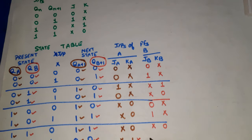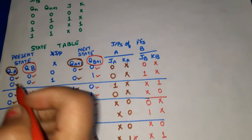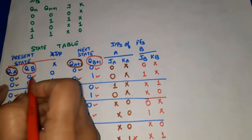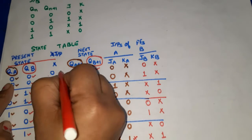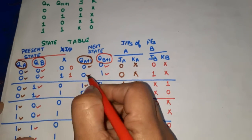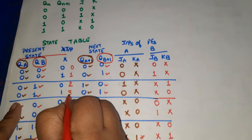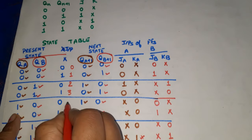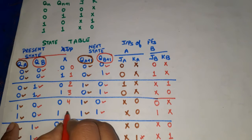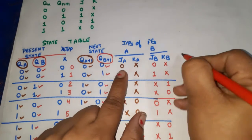Now for the equations, the three inputs QA, QB, and X are treated as input variables. Their decimal equivalents: 000=0, 001=1, 010=2, 011=3, 100=4, 101=5, 110=6, 111=7.